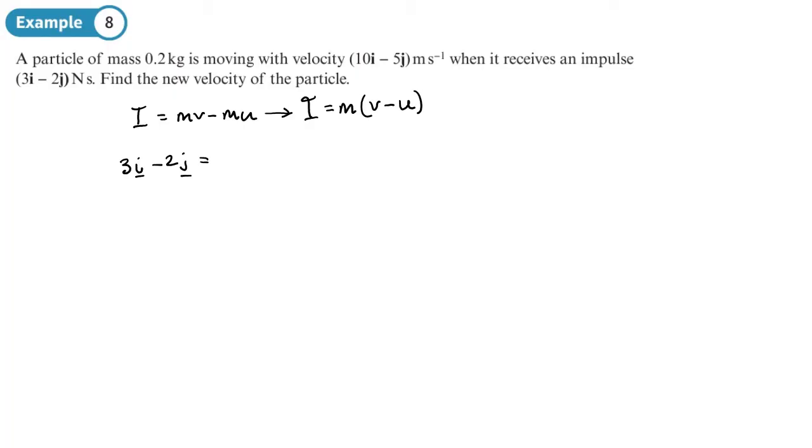So our mass is 0.2 and we know the velocity before. We don't know the velocity afterwards, so I'm going to underline it. Actually now I should underline these because these are all vectors. So we want to find the velocity afterwards. The velocity before is going to be this 10i minus 5j.